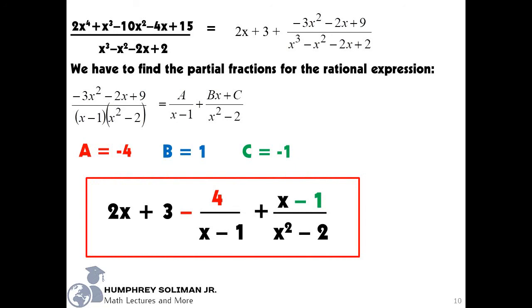2x plus 3, minus 4 over the quantity x minus 1, plus the quantity x minus 1 over the quantity x squared minus 2.